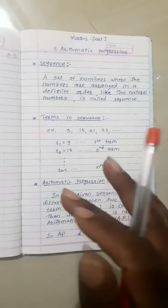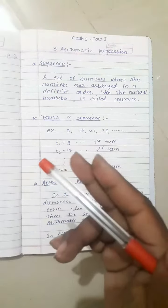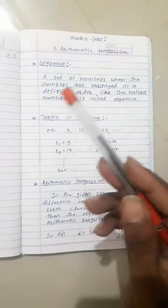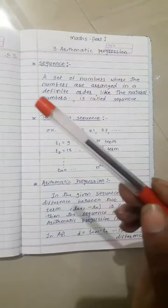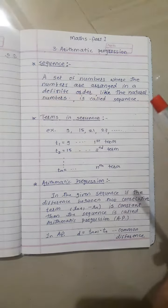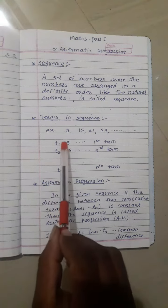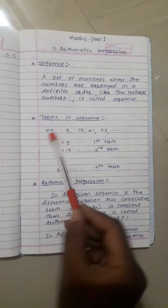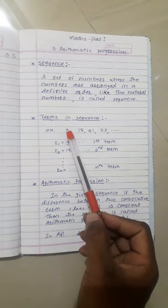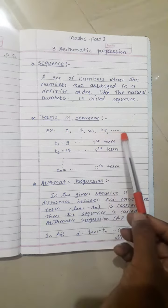One number increases to the next, like 2, 4, 6, 8. A set of numbers where the numbers are arranged in a definite order is called a sequence. In sequence, let's take one example: 9, 15, 21, 27, and so on.